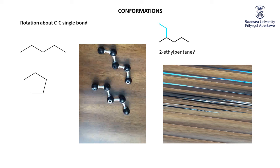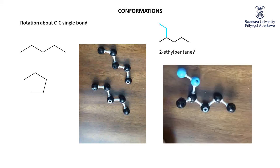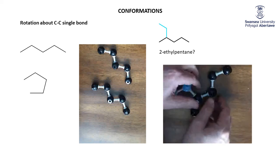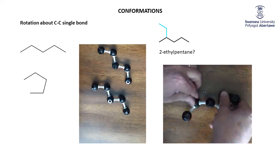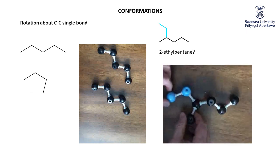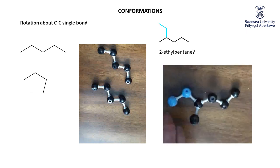So let me get the play button up — there we go. Turn it around, rotate around that one bond and there you are: 1, 2, 3, 4, 5, 6 with the methyl group at position 3.